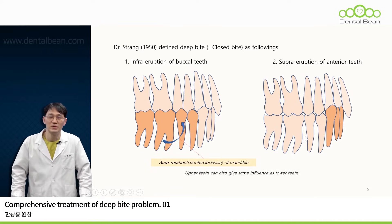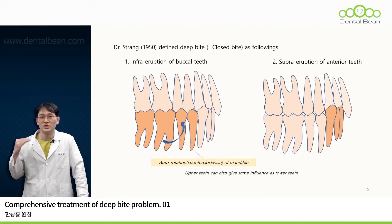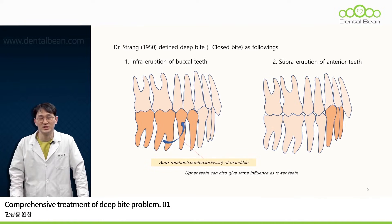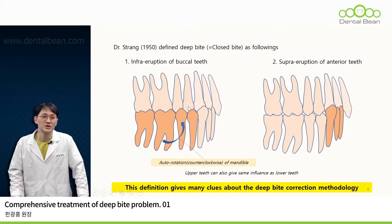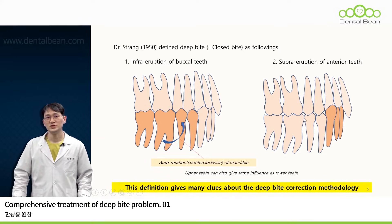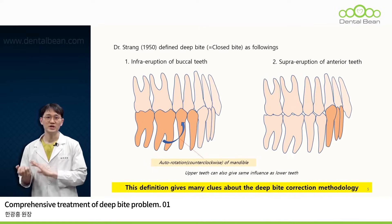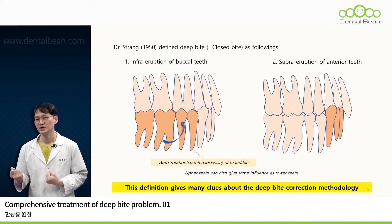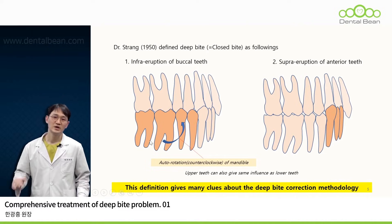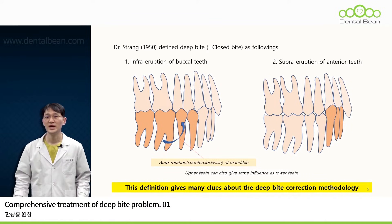This means that, whether in the maxillary or mandibular arch, a deep bite can manifest due to either infra-eruption or supra-eruption of the teeth involved. Dr. Strang's definition gives us important clues regarding the various treatment approaches — if a deep bite results from the infra-eruption of posterior teeth or the supra-eruption of anterior teeth, our treatment strategy should directly reverse these conditions. Therefore, a deep bite can be effectively managed by either extruding the posterior teeth or, conversely, by intruding the anterior teeth.